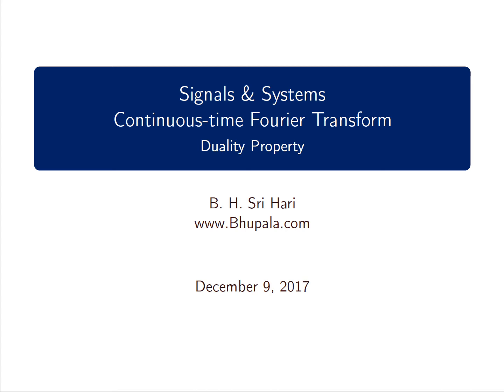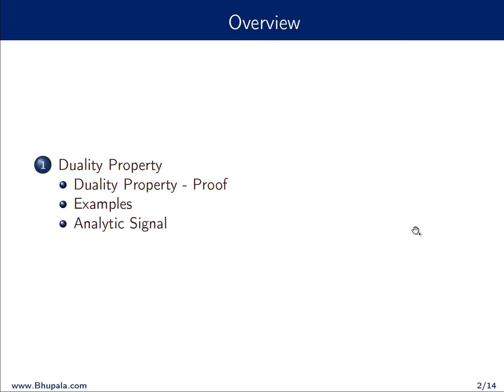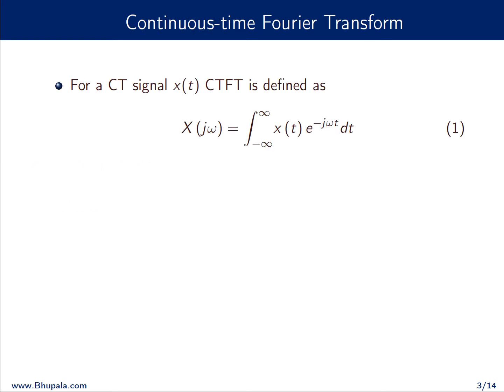In this video we will be talking about the duality property of the continuous time Fourier transform. The summary of the talk would be: first we will discuss the duality property, we will see the proof of the duality property, we will see six examples, and from that we will try to define what is an analytic signal, and we will end the talk with an example for an analytic signal.